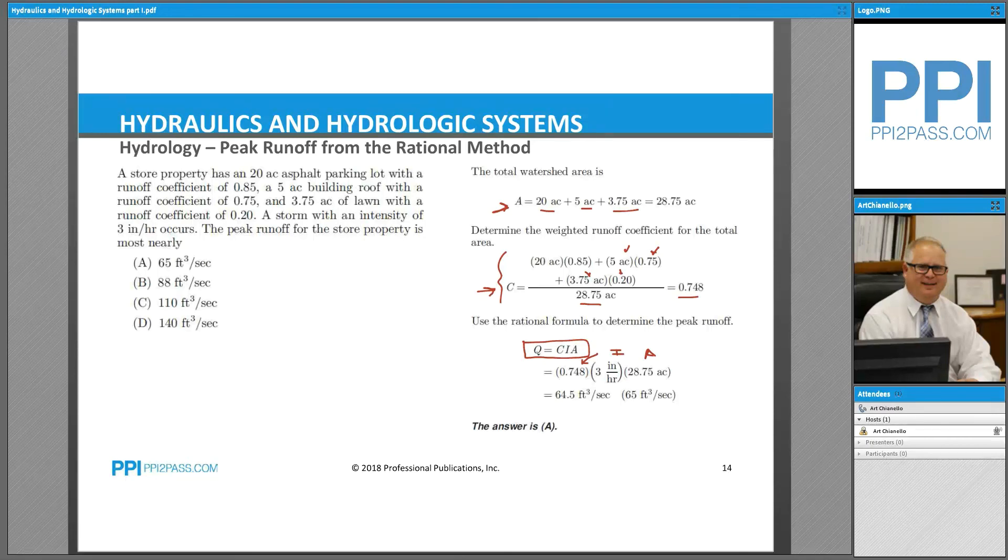0.748 we put right here in for C, and then we get a peak runoff of 64.5 cubic feet per second. And those are the units that we commonly use: cubic feet per second rather than acre-inch per hour.